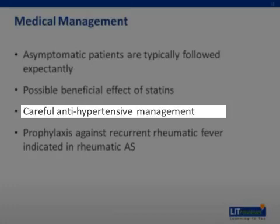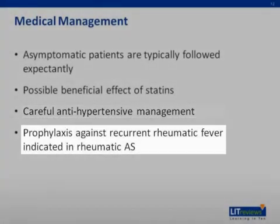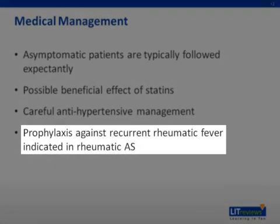It is important to treat hypertension in patients with AS, but antihypertensive therapy should be started at low doses and gradually titrated up due to the possibility of adverse hemodynamic events, including reduced preload and hypotension. Diuretics are typically avoided due to concern for reduced preload. In patients with rheumatic heart disease, antibiotic prophylaxis is recommended, typically with penicillin, and should be continued for at least 10 years after the last episode of rheumatic fever and until the age of 40. Lifelong prophylaxis is indicated for high-risk patients, including teachers and daycare workers.